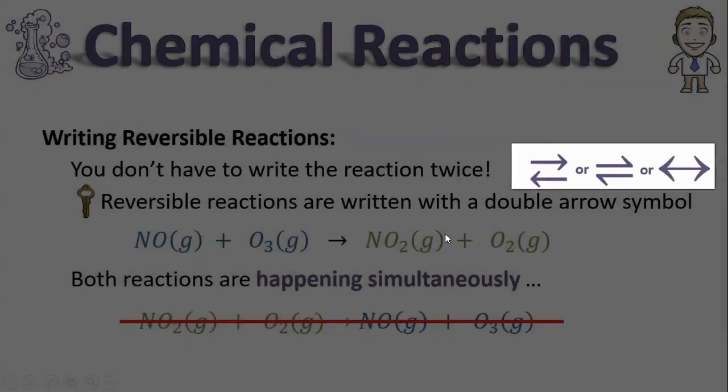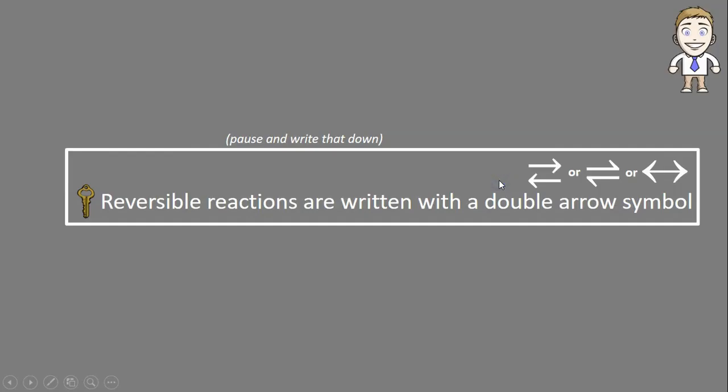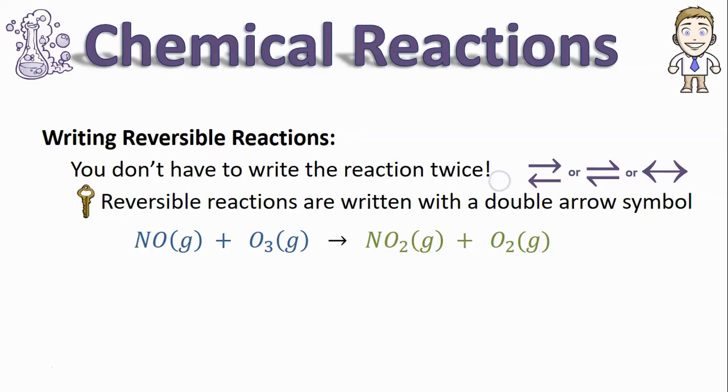There's three different versions of this special arrow you could see, indicating that it goes forward and also reverse at the same time. So for reversible reactions, you can expect to see instead of an arrow that moves only in the forward direction, this special forward and reverse arrow.